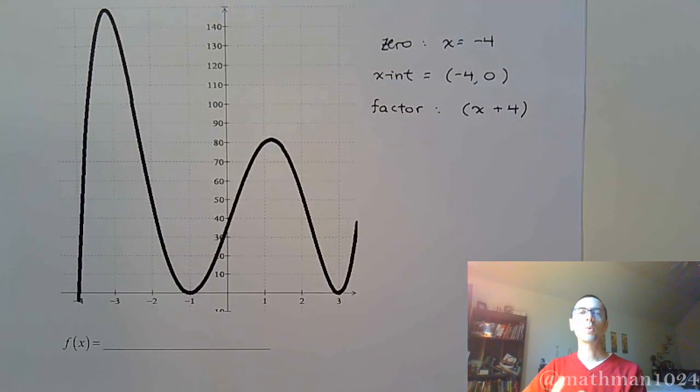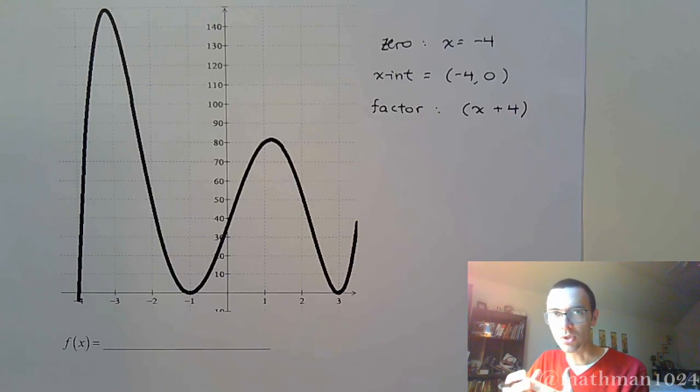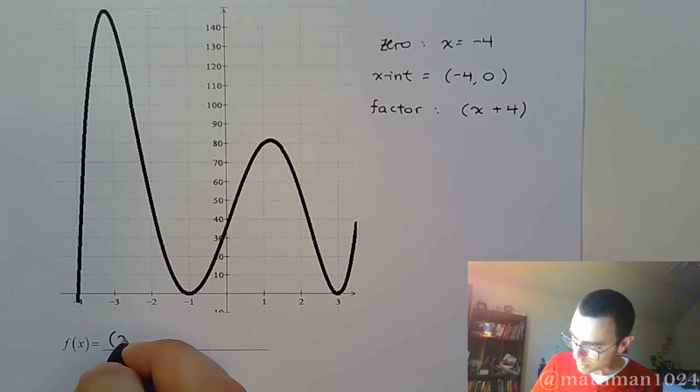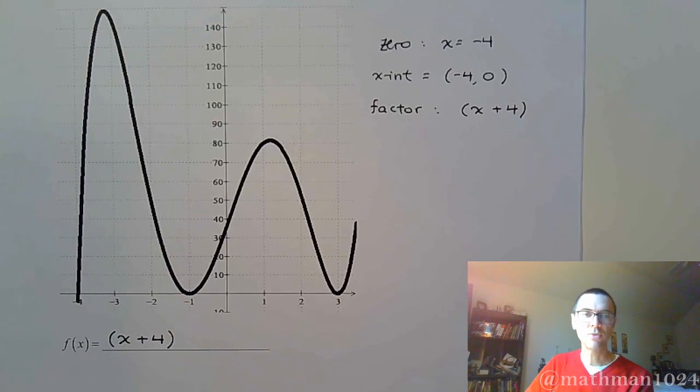that means the factor is going to be x plus 4. Imagine you're kind of going backwards from that. I'm telling you what the solution is. Backtrack to the factor. So it's x plus 4.